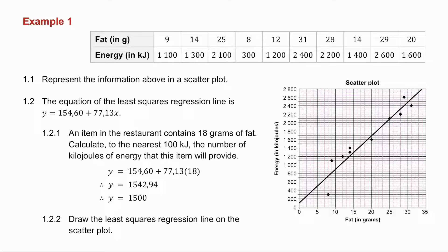The first question asks you to represent the information in a scatterplot. So we need to plot the following coordinates. 9, 1100 is there. 14, 1300 is there. Etc, etc. So plot all of those points on the scatterplot.